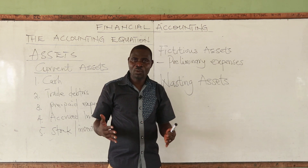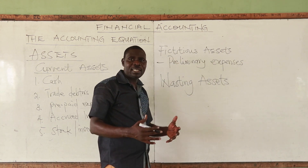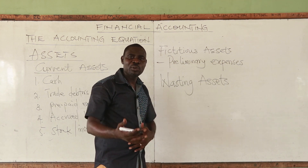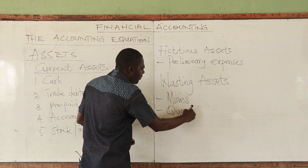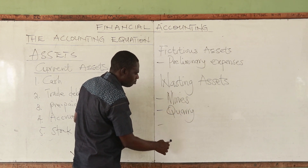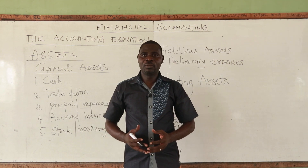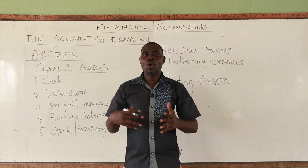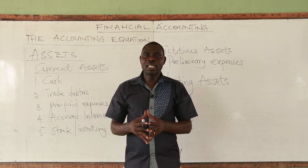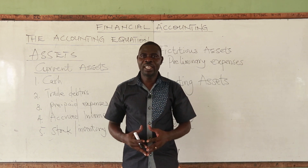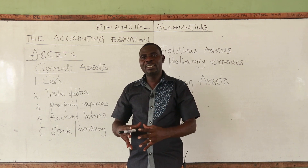Another example of wasting assets is quarry, and we can also talk about forests. These assets are difficult to replace as and when they are used up. So assets have been explained as the resources controlled by an entity, from which future benefits are expected to flow. They are the properties of the business, used to generate income.